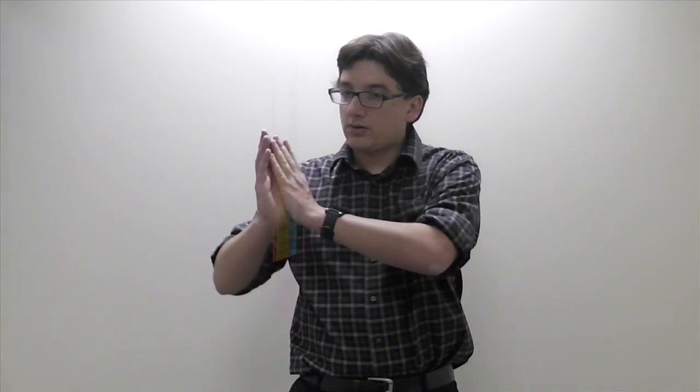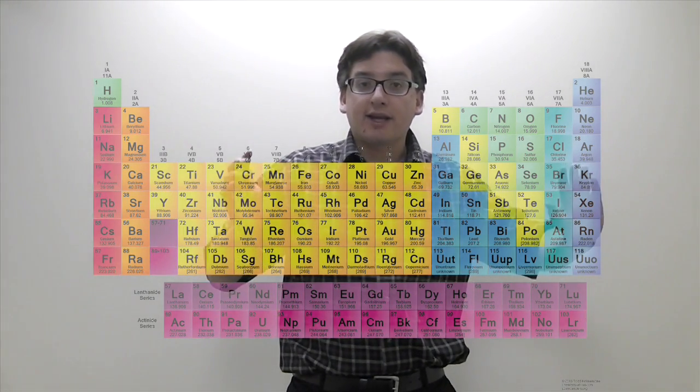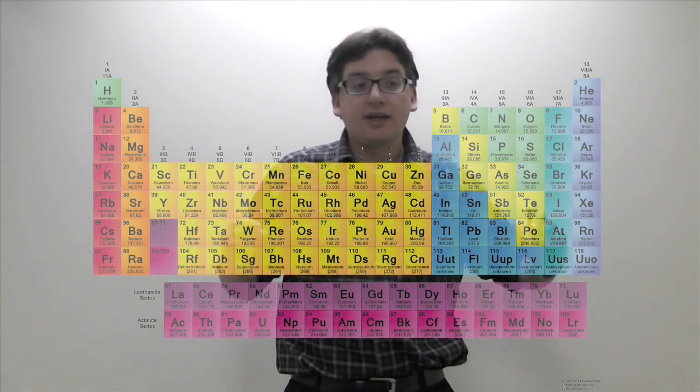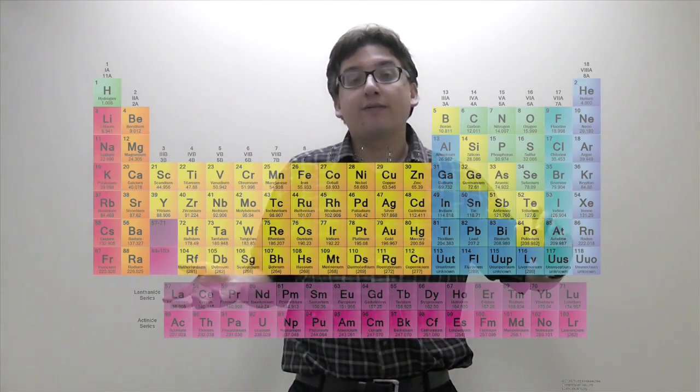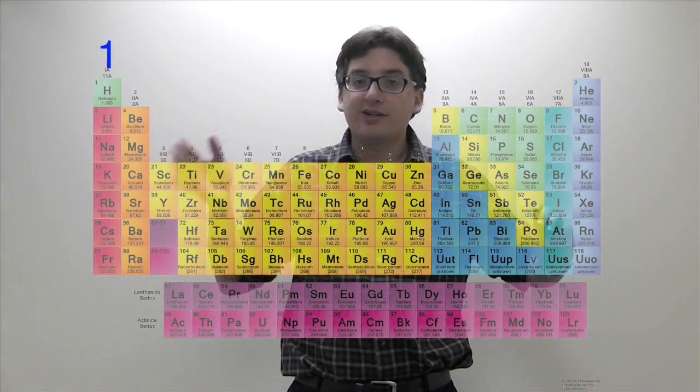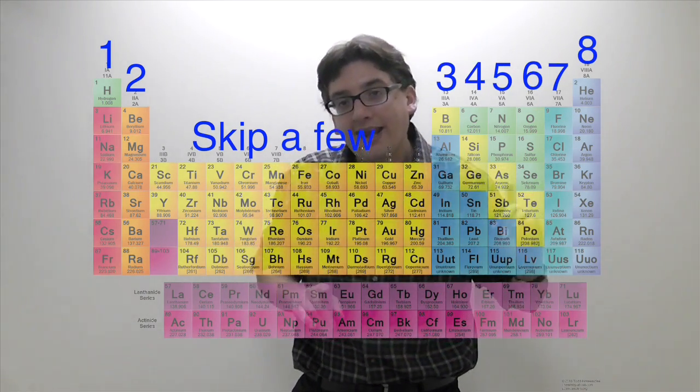Alright, so if I look at the periodic table again, that means that basically what column you're in is going to determine how many valence electrons there are, right? So basically the way you go, one, two, skip a few, they all have two, three, four, five, six, seven, eight.